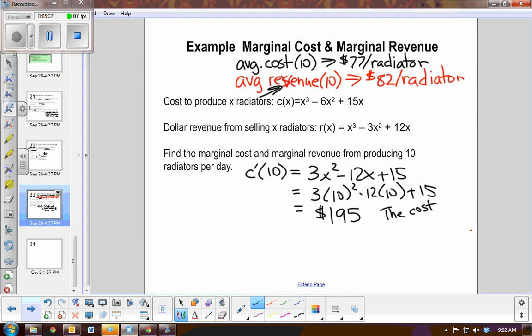So this is the cost to produce one more radiator. Remember, it's the slope. It's the change in y, which is cost, over the change in rate over radiators. That's the cost of producing one more radiator. Now that seems a little high, doesn't it? Because at this point, our average production is $77 for one radiator.